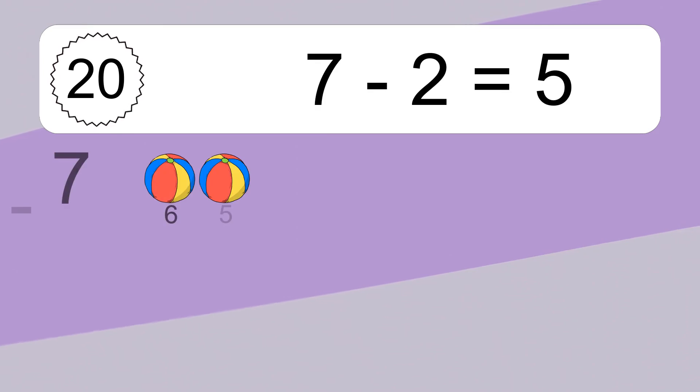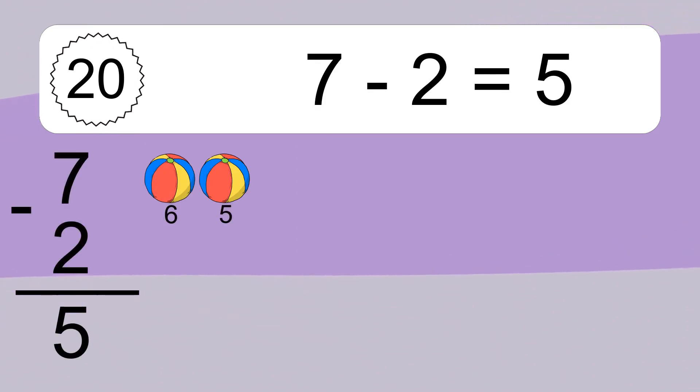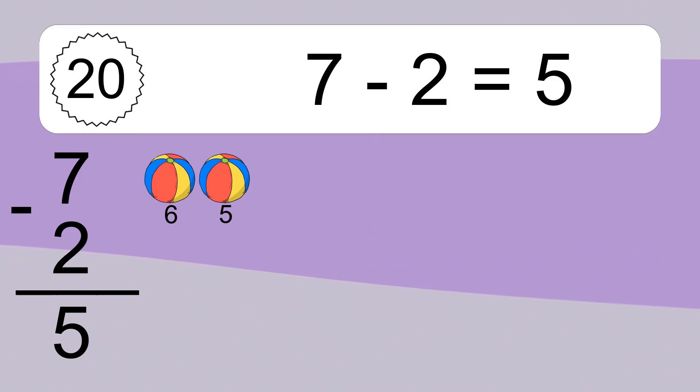7 minus 2 equals 5. Let's count it: 6, 5.